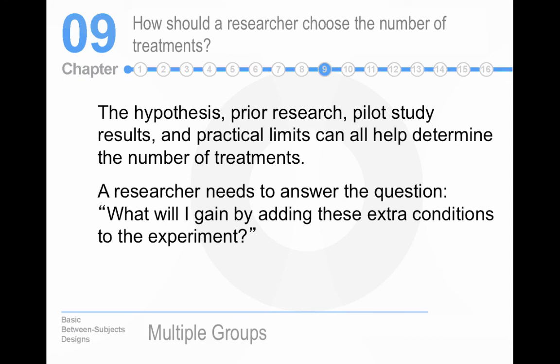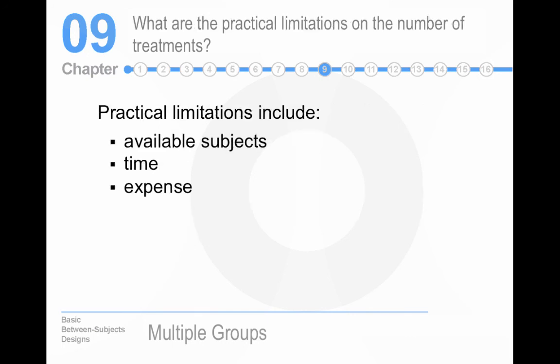How should you choose the number of treatments? Well, the overarching consideration is always the research question. That drives everything else. And so that becomes part of the design. What are the practical limitations? Well, running multiple groups, running a multiple groups design is complicated and complex. It just gives you more things that you have to juggle. So, time, expense, available number of people to be in your study.